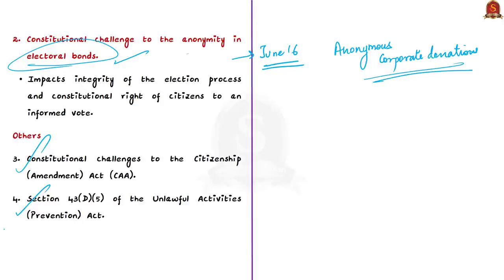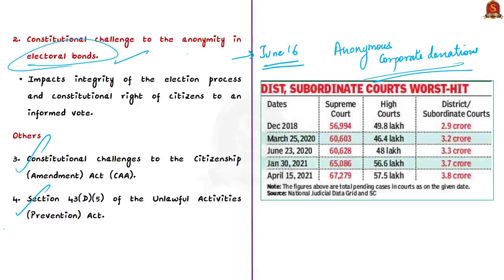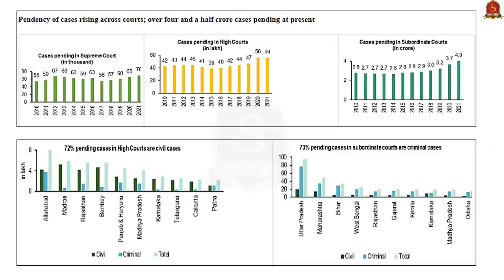Such unresolved pending cases result in violation of rights of people, and in certain cases amount to questions challenging the very nature of the Constitution itself. The problem of pending cases is quite extreme in India. Looking at the data, we can see the number of cases pending in the Supreme Court, High Courts, and subordinate courts — not in thousands or lakhs but in crores in district and subordinate courts. Pendency has increased over the years, varying significantly by state. Uttar Pradesh has very high pendency in subordinate courts and the Allahabad High Court; similarly, the Madras, Rajasthan, and Bombay High Courts have large numbers of pending cases.